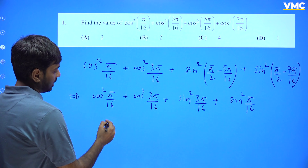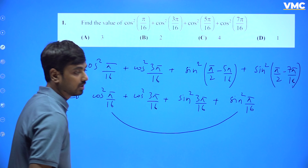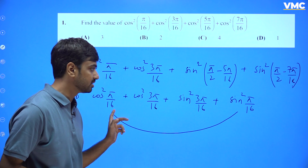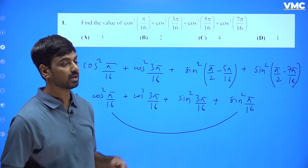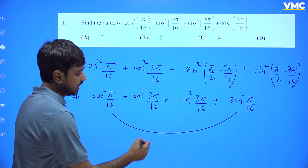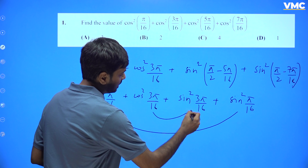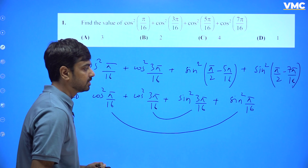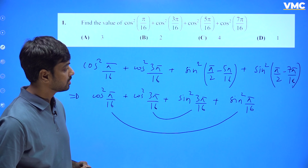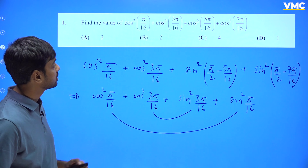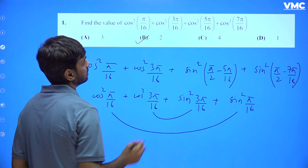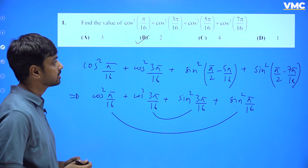Now adding the first and last: cos²(π/16) + sin²(π/16) = 1. And cos²(3π/16) + sin²(3π/16) = 1. So 1 + 1 = 2. The answer for the first question is 2.